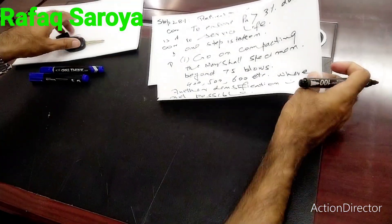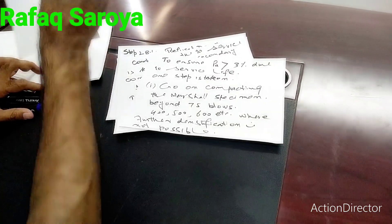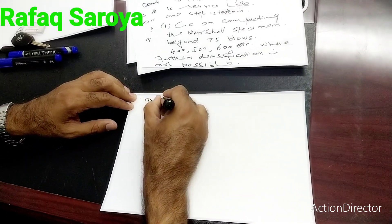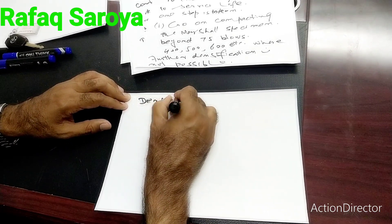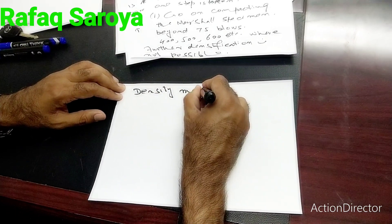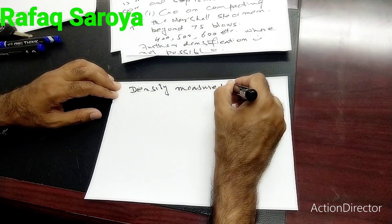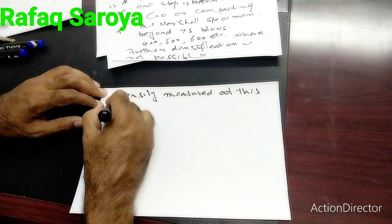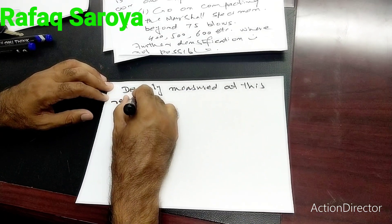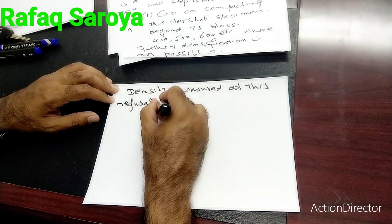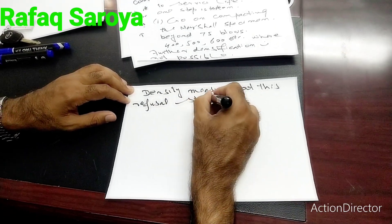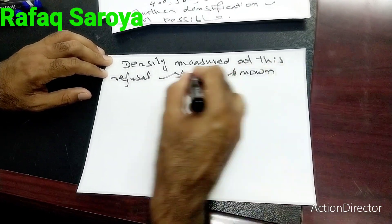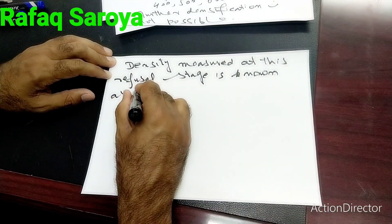Mark this: further densification is not possible. The density measured at this refusal stage is known as the refusal density.